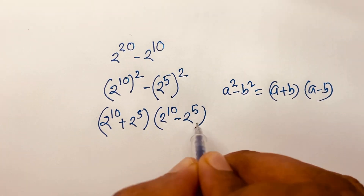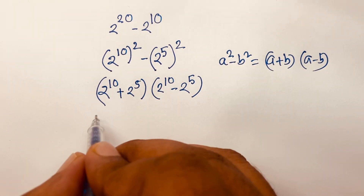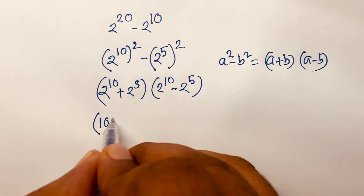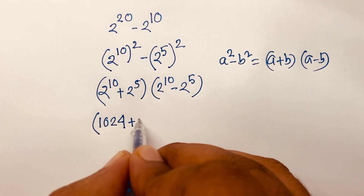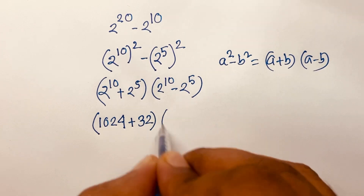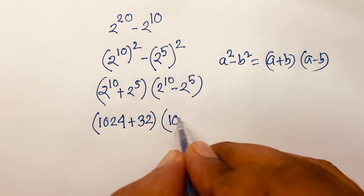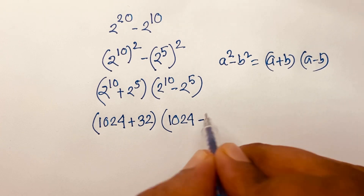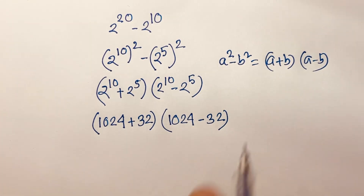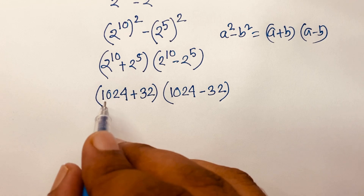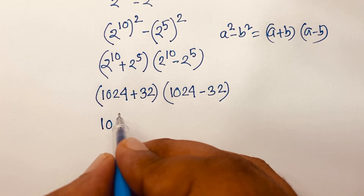We know that 2 to the power 10 is 1024, and 2 to the power 5 is 32. So it becomes (1024 plus 32) times (1024 minus 32), which gives us 1056 times 992.